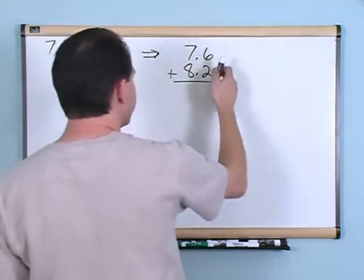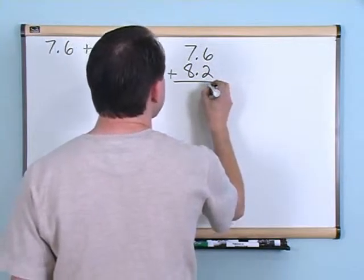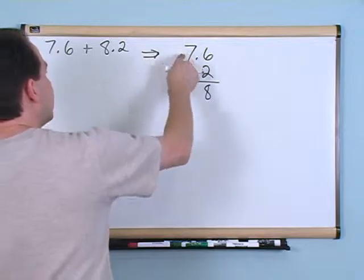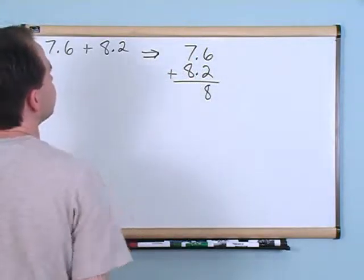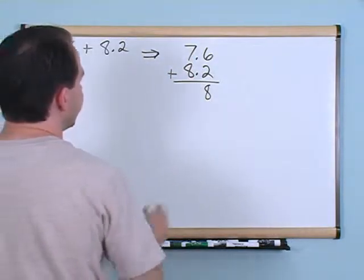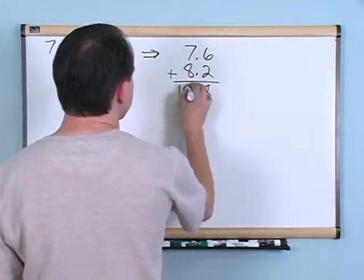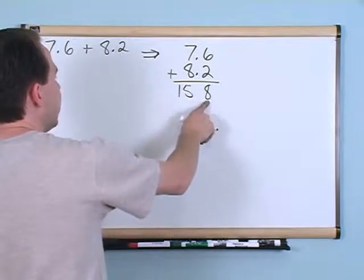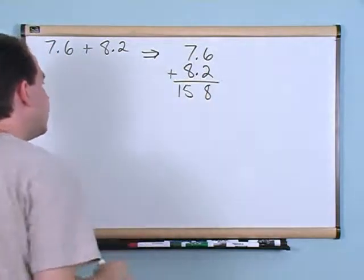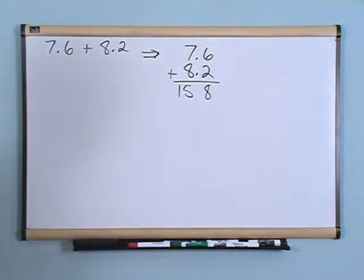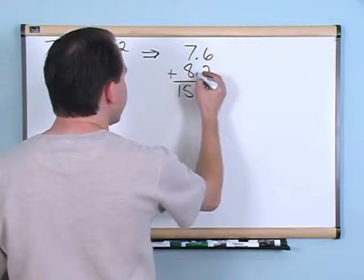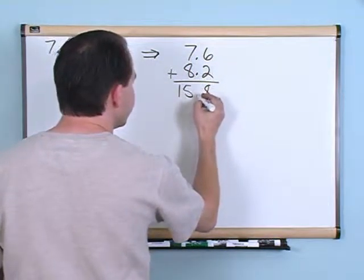After that you're going to basically add just like you always add — that's why I say it's going to be almost exactly the same. Start in the right-hand column like we always do. 6 plus 2 gives you 8, and 8 plus 7 gives you 15. So you put 15.